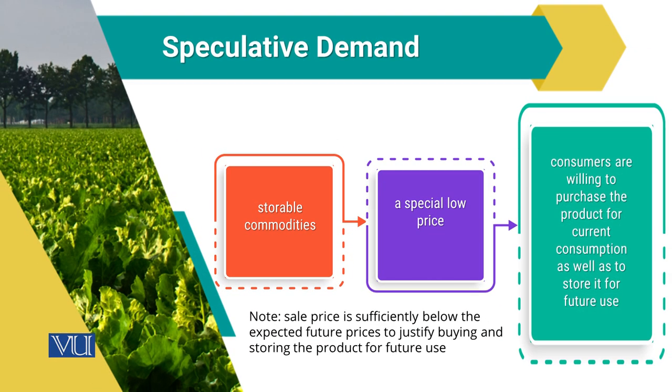For example, consider a consumer in a store. The normal price of rice was 200 rupees, but the store has a special promotion. Because of that promotion, the price of rice is now 150 rupees per kg. As a consumer, this creates a speculative demand for that particular commodity — a speculative demand for rice that also includes demand for rice for its future use. Whenever there is a special low price, it creates speculative demand.